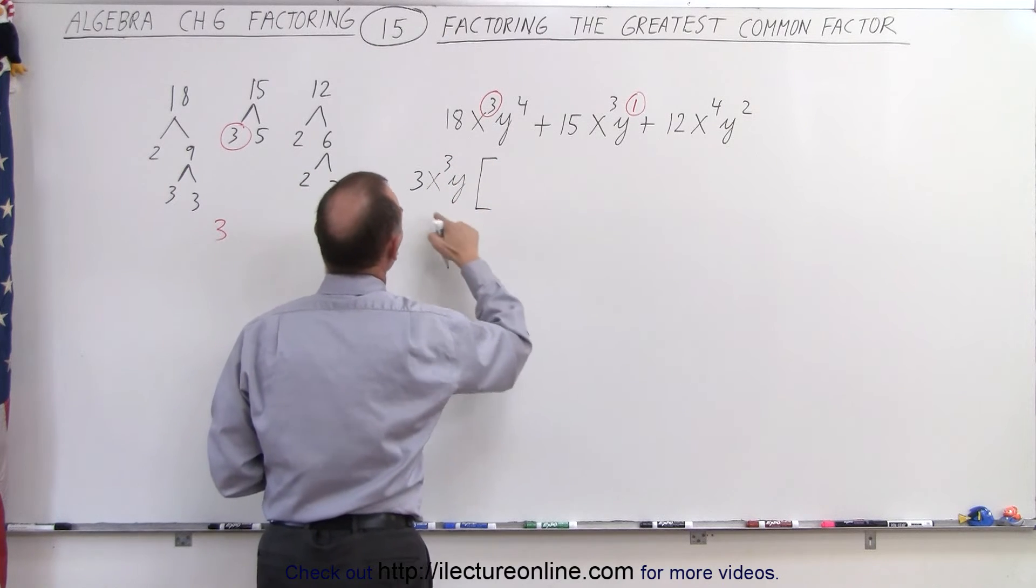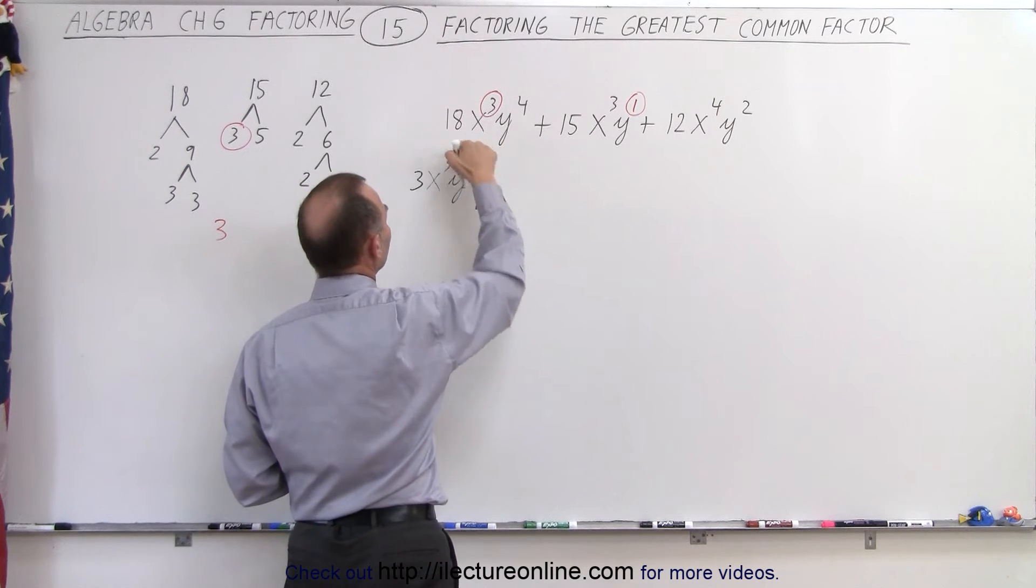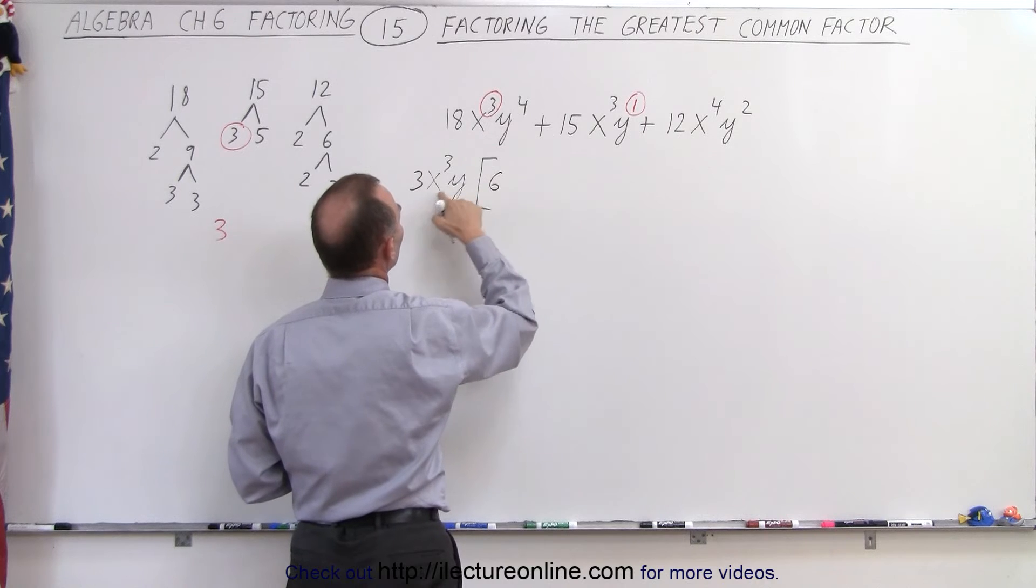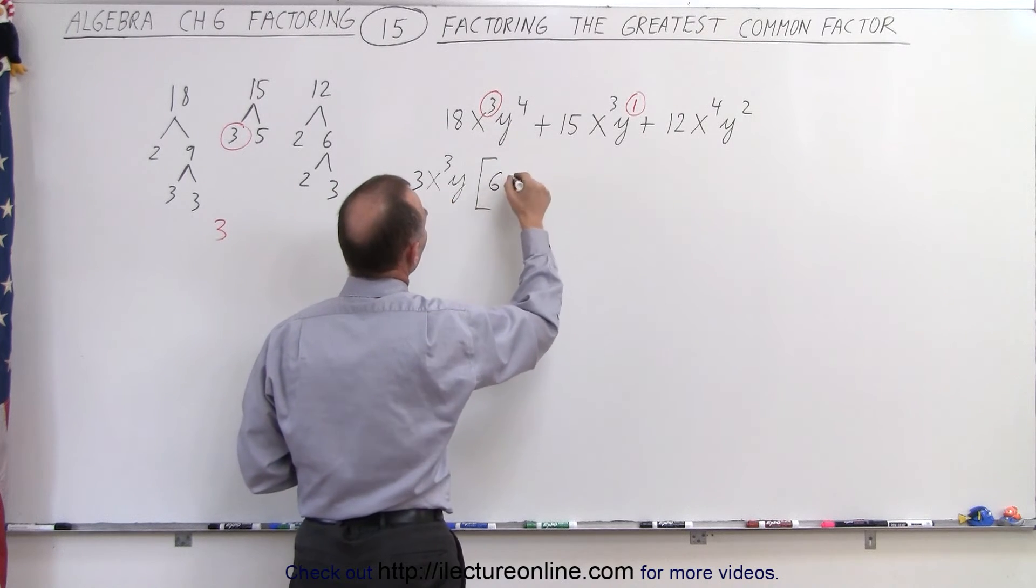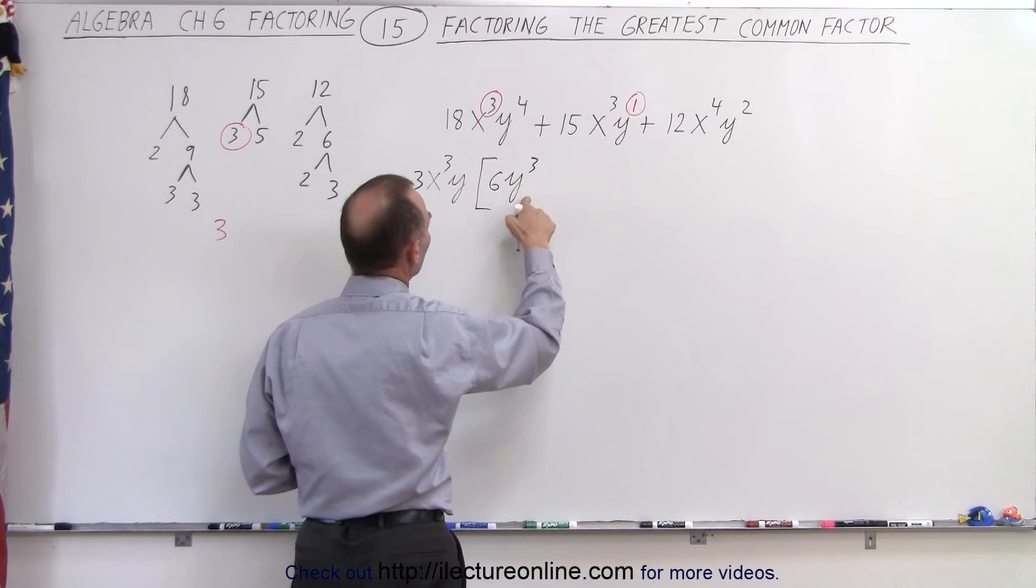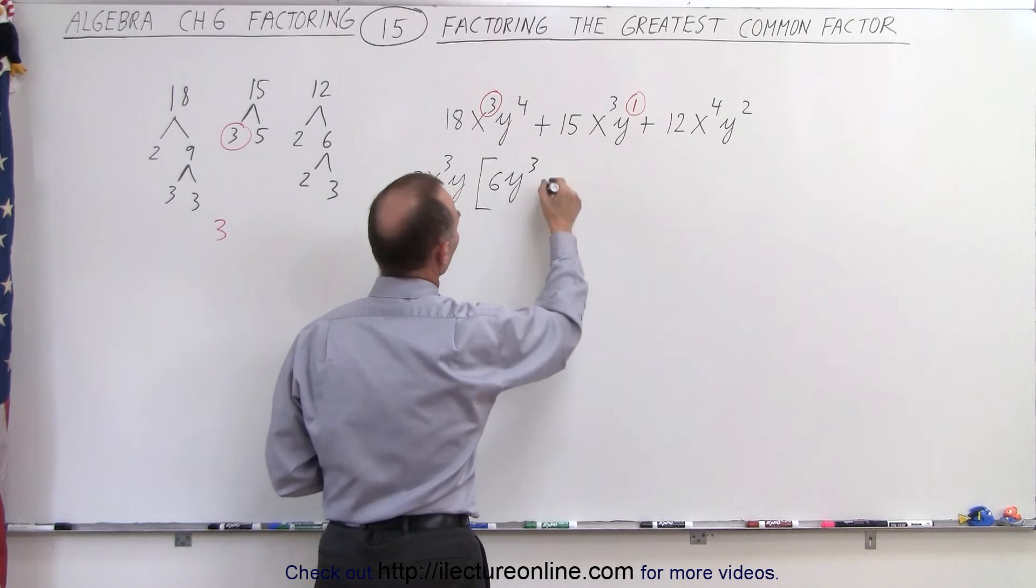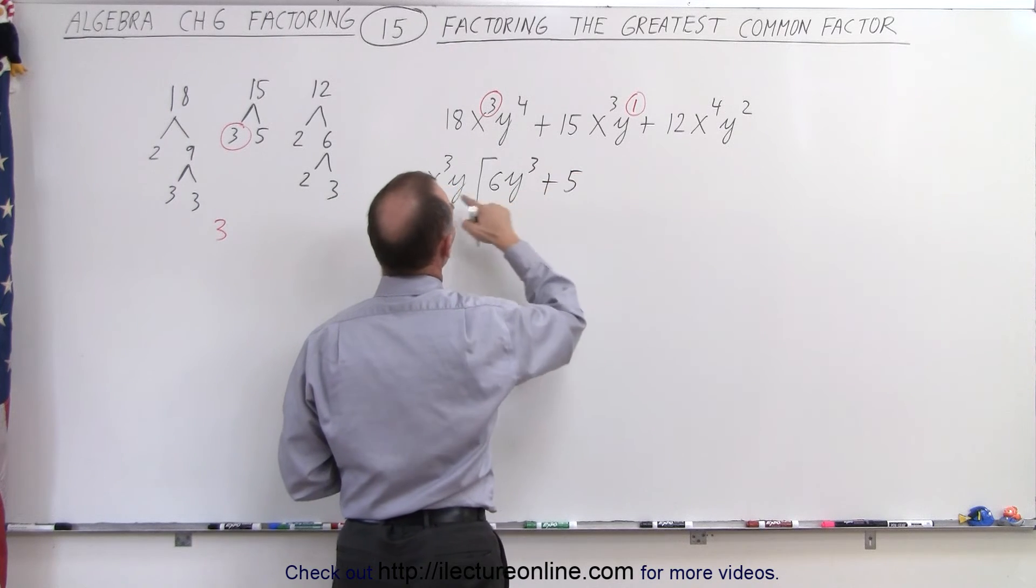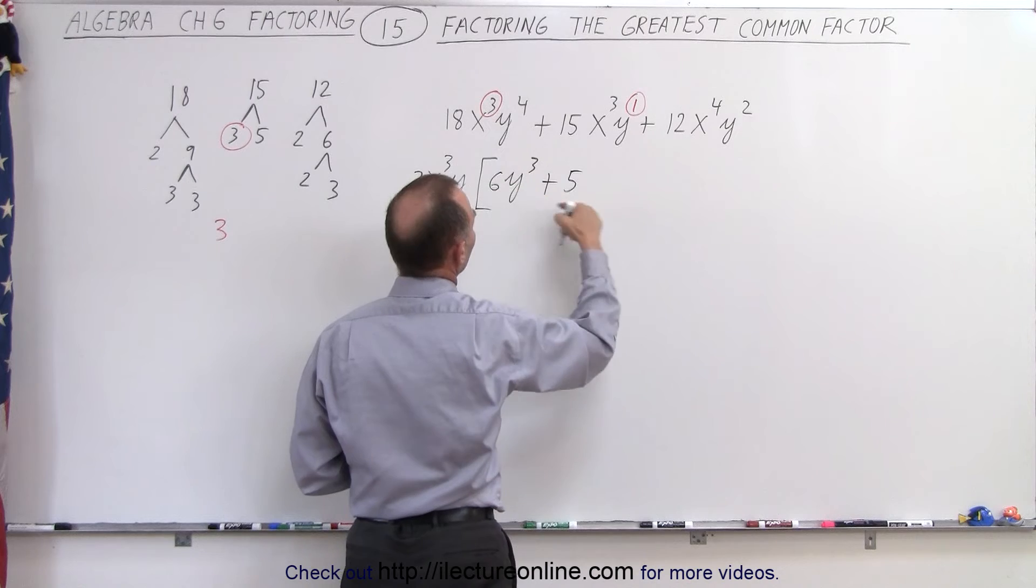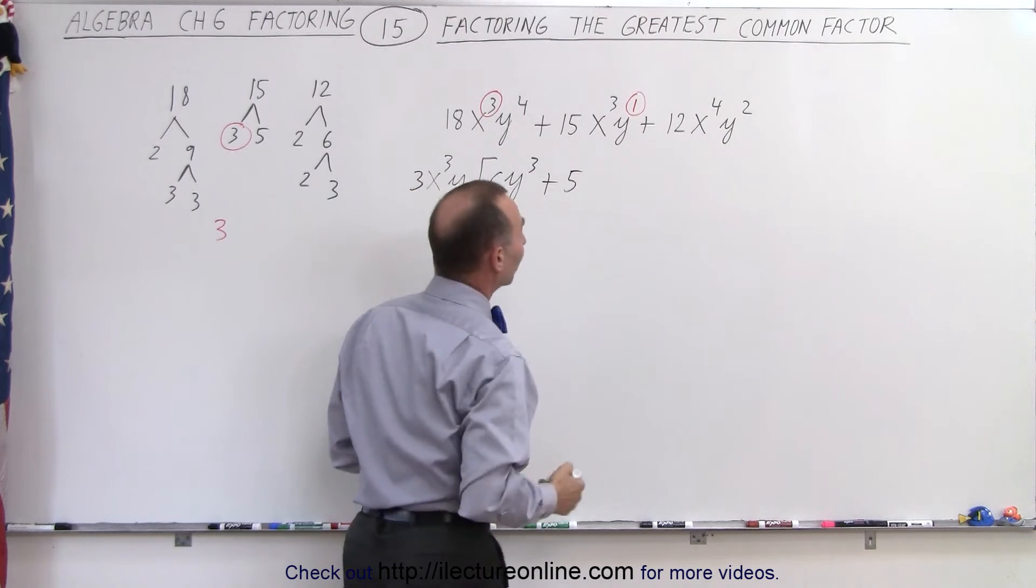Which leaves us with 3 times what gives us 18? That would be 6. x cubed, we already pulled out the x cubed, so that's gone. And we need a y to the third power because y times y to the third gives us y to the fourth. Plus 3 times what gives us 15? That would be 5. We already pulled out the x cubed, so that's gone. And we pulled out the y, so that's gone as well.